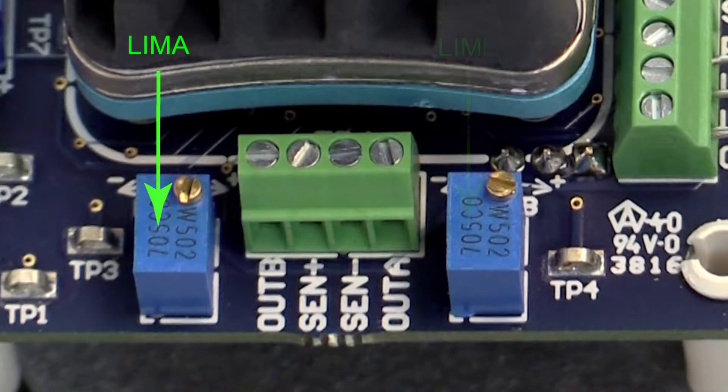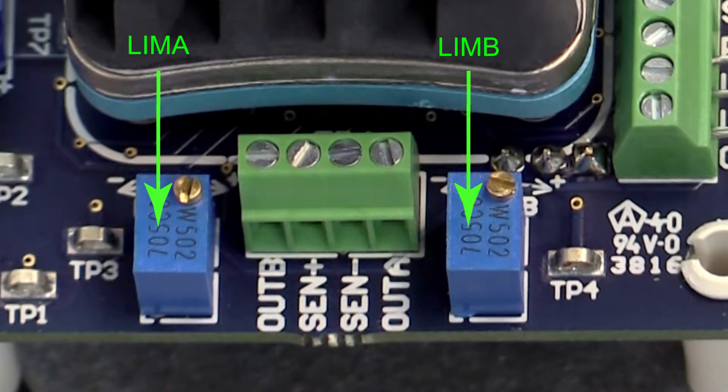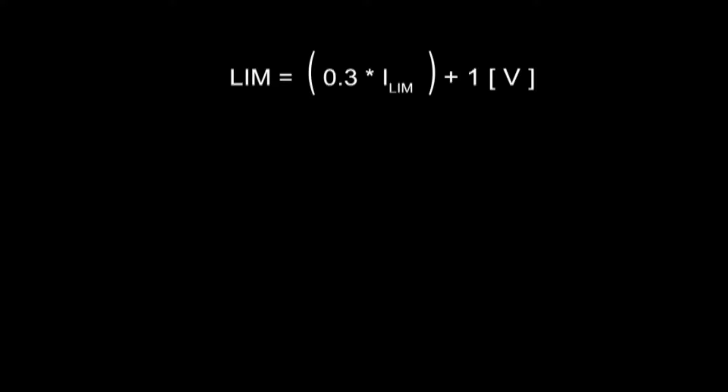The limit A and limit B trim pots independently adjust the heat and cool current limits from zero to a full 2.2 amps. Calculate the voltage at the limits corresponding to the desired limit current, ILIM.